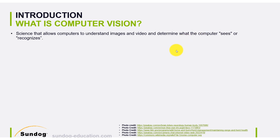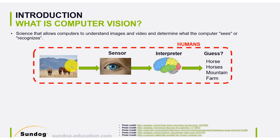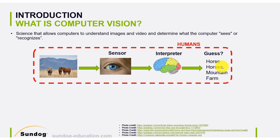Let's take a look at how humans actually use their eyes — the video stream we acquire through our eyes — and see how we can imitate it in a computerized fashion. So let's assume we have an image of horses in a farm with a bunch of mountains. The sensors we use are our eyes, and all the data is sent to our brain, which classifies what we see and makes guesses — for example, a horse, a group of horses, a mountain, a farm, or all of them together.